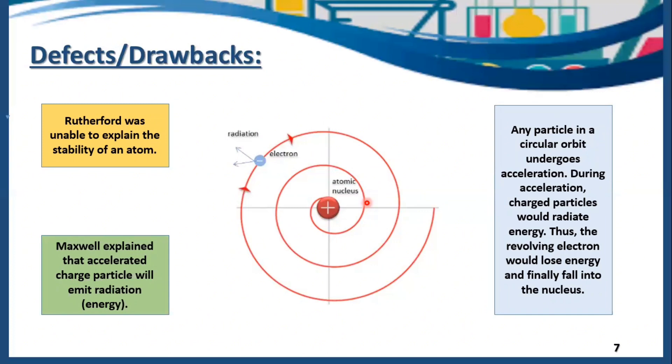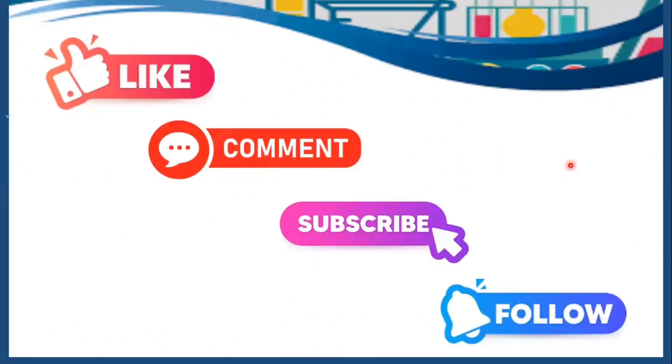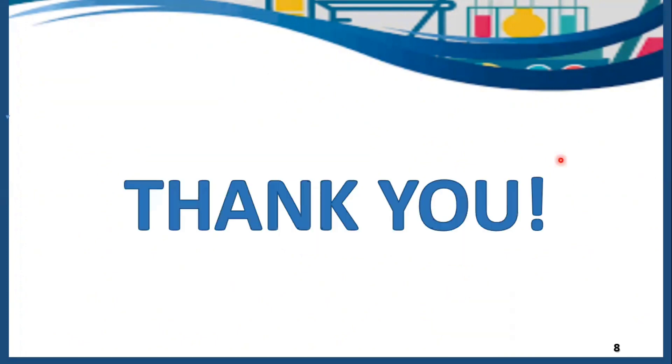This defect or drawback was later on cleared or explained by Bohr's atomic model. He said that electrons move in the orbits around the nucleus with a fixed energy. Do like, comment, subscribe and follow this channel for more such videos. Thank you.